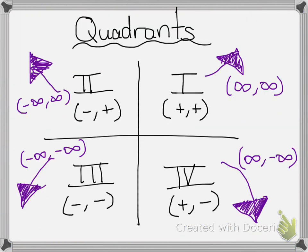Pause the video and copy this down. As you can see, I basically labeled the quadrants on a coordinate plane as well as what the signs would be for x and y for every order pair in that quadrant. This purple stuff that you see — those are the arrows. So if your arrow ends up in the first quadrant, since it's positive-positive, that means it will be positive infinity comma positive infinity when you label it.